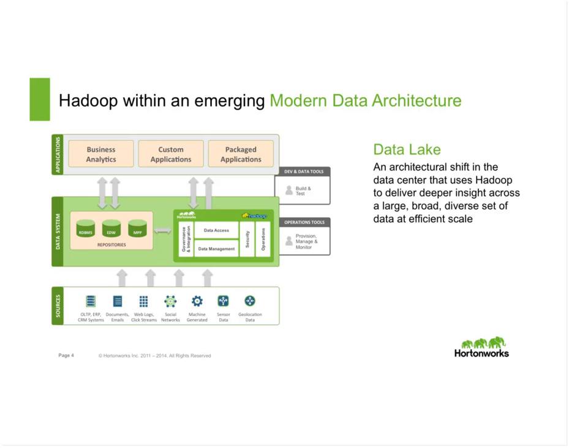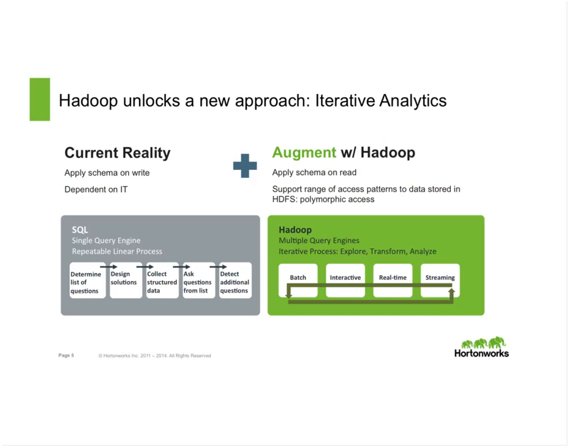Hadoop not only allows you to store a lot of data inexpensively in raw form, it also allows us to use, explore, and process it in an iterative manner. Before Hadoop, a lot of stuff was a repeatable linear process — you determine the list of questions, design the solution, collect the data. With Hadoop, you have new types of data — text, audio, transactional — and you can integrate and iterate much faster. This allows us to access data in different patterns and creates a lot more productivity for data scientists.